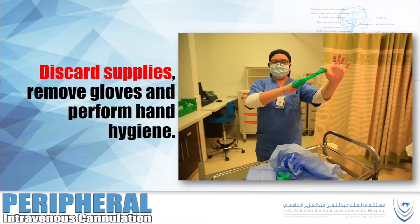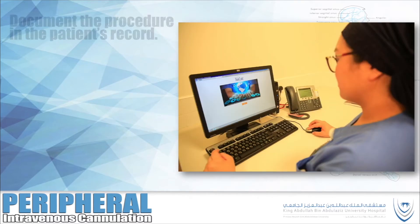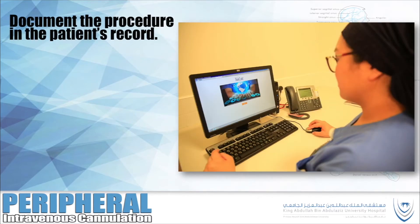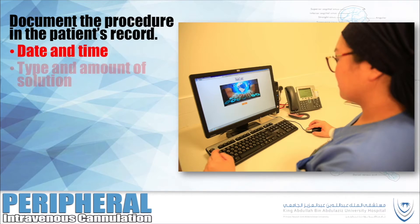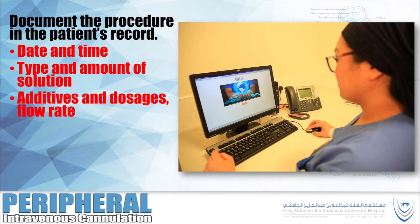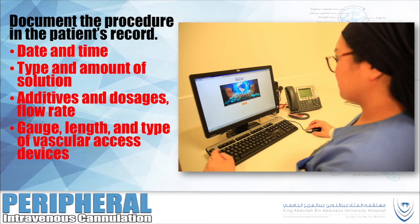Discard supplies, remove gloves, and perform hand hygiene. Document the procedure in the patient's record, including: the date and time, type and amount of solution, additives and dosages, flow rate, gauge, length and type of vascular access device, and catheter insertion site.